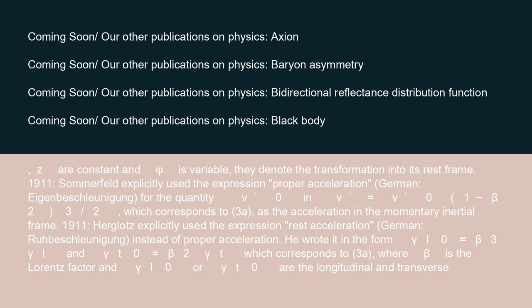1911: Sommerfeld explicitly used the expression 'proper acceleration' (German: Eigenbeschleunigung) for the quantity v₀ in v equals v₀·(1 − beta²)^(3/2), corresponding to 3a, as the acceleration in the momentary inertial frame. 1911: Herglotz explicitly used the expression 'rest acceleration' (German: Ruhbeschleunigung) instead of proper acceleration. He wrote it in the form gamma_l0 equals beta³·gamma_l and gamma_t0 equals beta²·gamma_t, corresponding to 3a, where beta is the Lorentz factor, and gamma_l0 or gamma_t0 are the longitudinal and transverse components of rest acceleration.